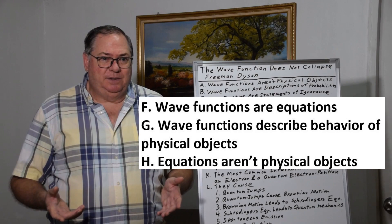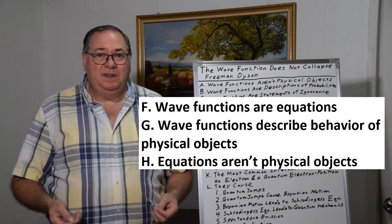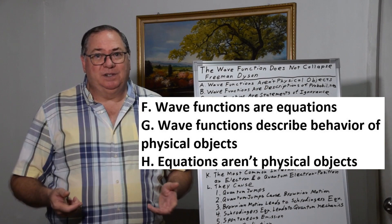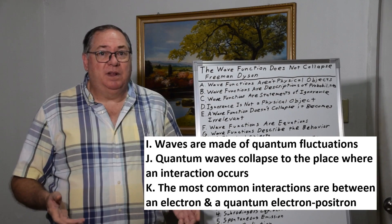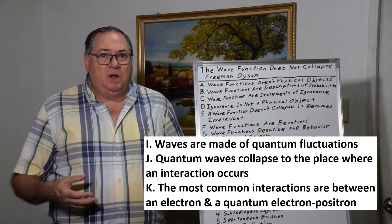Wave functions are equations. Wave functions describe the behavior of physical objects, and the equations aren't physical objects. The waves, when there are waves, are made of quantum fluctuations. And the quantum fluctuations are the medium—they are the physical objects.